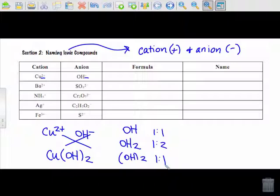Okay, so what's the formula we just did for Cu²⁺ and OH⁻? Cu(OH)₂. To name it, what are the rules for naming ionic compounds? For the cation, you just say the whole name. For the anion, you take the root and add -ide.